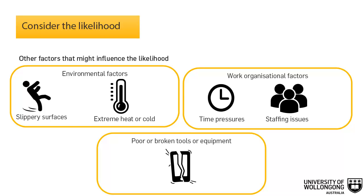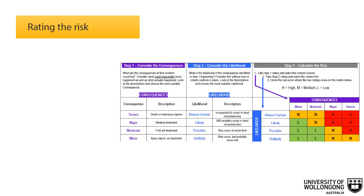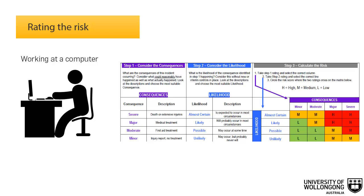The university has a risk matrix that is used to calculate the level of risk. Let's work out the level of risk for working at your computer. First, consider the most likely harm to occur — the most likely harm would be medical treatment if you receive a repetitive strain injury, so the consequence is major. Next, consider the likelihood, taking into consideration factors like working long hours, whether your equipment is set up properly, and whether you are taking breaks. The most probable likelihood would be that an injury may occur at some time, so the likelihood is possible. Therefore, the risk rating for working at your computer is medium.